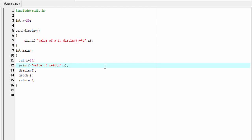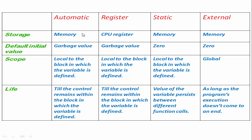So that was our coverage of storage classes in C. Let's see a quick recap of the four storage classes: automatic, register, static, and external. These are their properties.